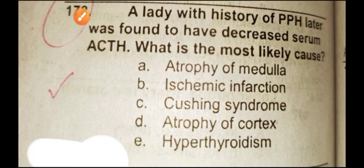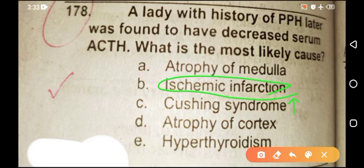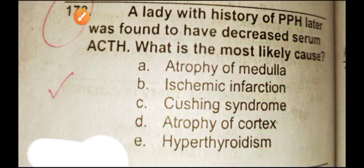Another MCQ: a lady with history of PPH, later found to have decreased serum ACTH — what is the most likely cause? Again, the answer is ischemic infarction — this is Sheehan syndrome. This is not Cushing's; in Cushing's you have increased ACTH. In atrophy of the cortex you also have increased ACTH. Here ACTH is decreased, so the answer is ischemic infarction.